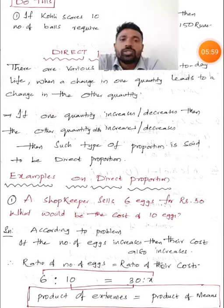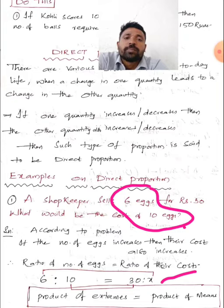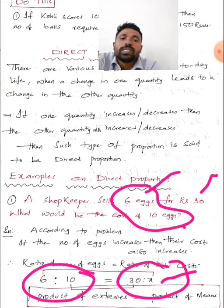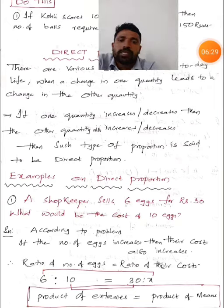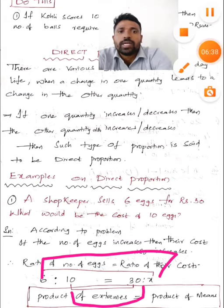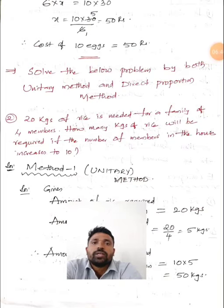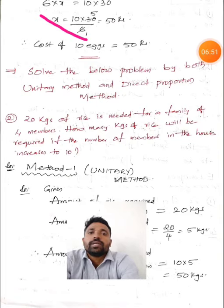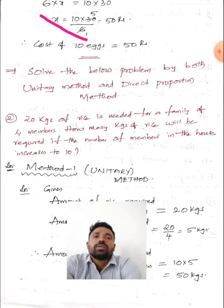Ratio of number of x is 6:10. We don't know the cost of 10x, so let us take it as x. Cost of 6x is 30, so the ratio of costs is 30:x. Applying the proportional condition — product of extremes equals product of means — 6 and x are extremes, 10 and 30 are means. So 6 × x = 10 × 30, giving x = 300/6 = 50 rupees. Cost of 10x = 50 rupees.